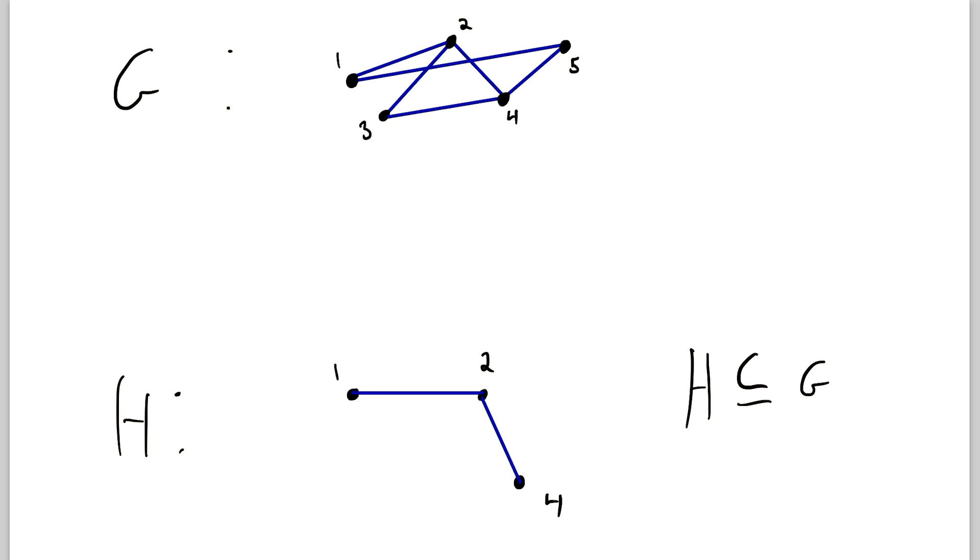We see that G has vertices 1, 2, 3, 4, and 5. H only has 1, 2, and 4. So it's lacking 3 and 5. So it's not a spanning subgraph right now.